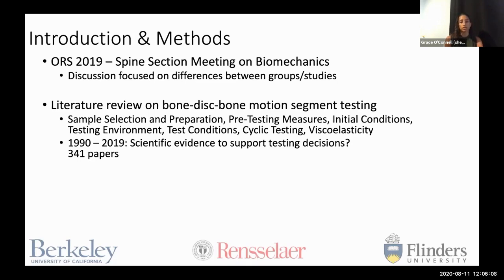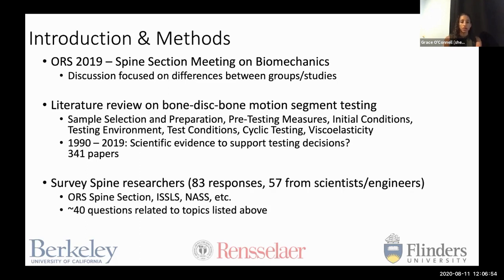After that meeting, the three of us continued to meet through Zoom and Skype to discuss the literature. We reviewed the literature for bone disc bone motion segment testing, looking at how every decision could be made — from sample selection and sample preparation all the way up to how you actually conduct the test, including cyclic testing, static loading, initial conditions, and boundary constraints. We reviewed the scientific literature from 1990 to 2019, reviewing a total of 341 papers.